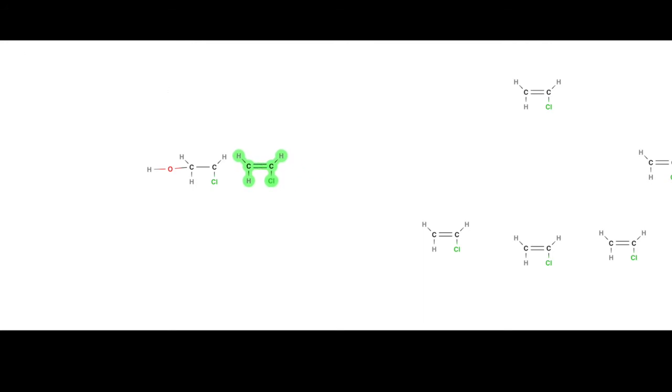Each time a free radical hits another chloroethene molecule, a new longer chain is formed. This stage is known as propagation.